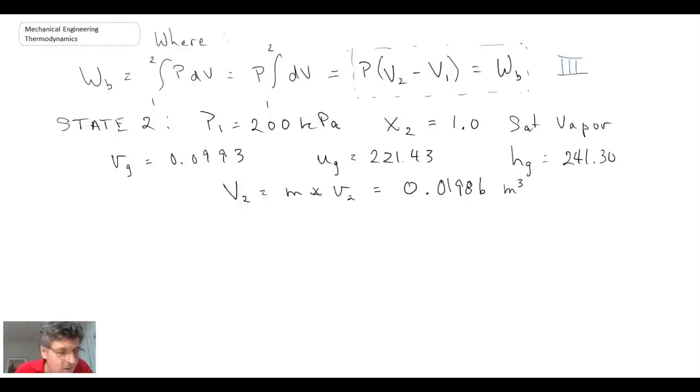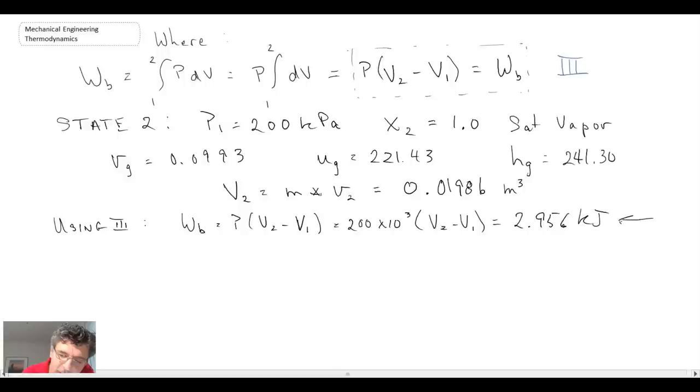First, we calculate the volume at two, just like we did for the volume at one. We know the mass and we know the specific volume at two. We can then calculate the boundary work using equation three. You have to be careful here because when you do this calculation, you will get a value in joules, but our equation is expressed in kilojoules. Be careful when you calculate the boundary work. Your number will come out in joules, but you need to convert it into kilojoules, so divide by a thousand. That is the answer to the second part of the problem: the work done is the boundary work.